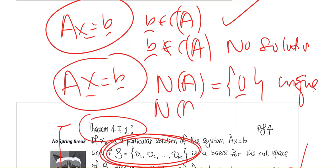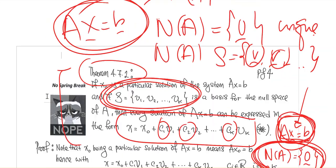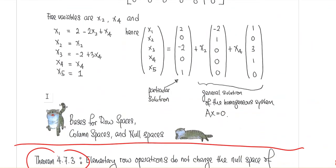If the null space of A is non-trivial — it has a basis v1, v2, and so forth of non-zero vectors — then if the system has a solution, the solutions will not be unique; you will have infinitely many solutions. This is what we talked about last time, and we are going to use it again today.